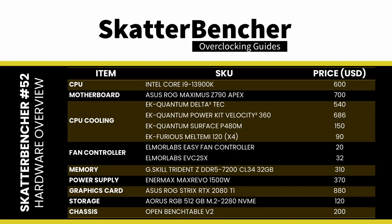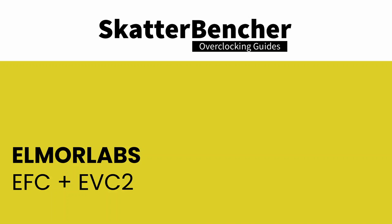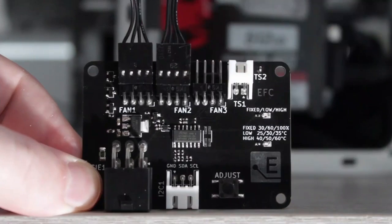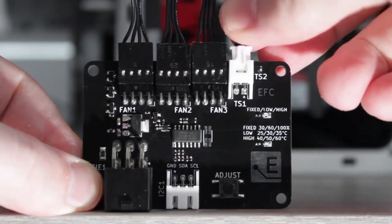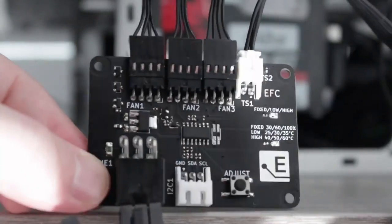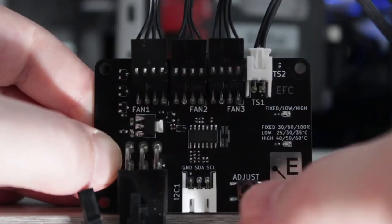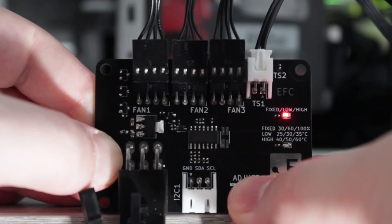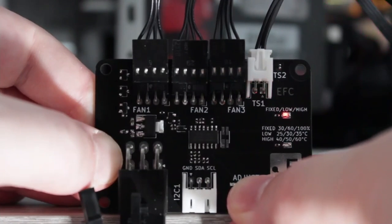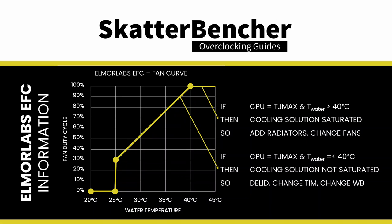The system we're overclocking today consists of the following hardware. By connecting the EFC to the EVC2 device, I monitor the ambient temperature, water temperature, and fan duty cycle. I also use the Elma Labs EFC to map the radiator fan curve to the water temperature, using the low-high setting to map the fan curve from 25 to 40 degrees water temperature. This configuration gives us a good indicator of whether the cooling solution is saturated.